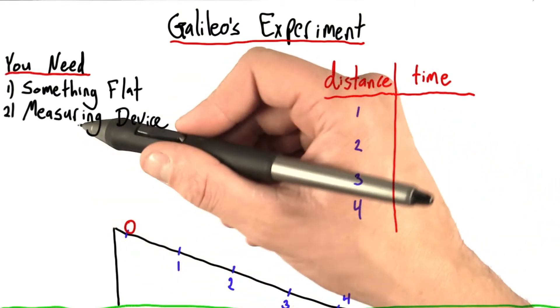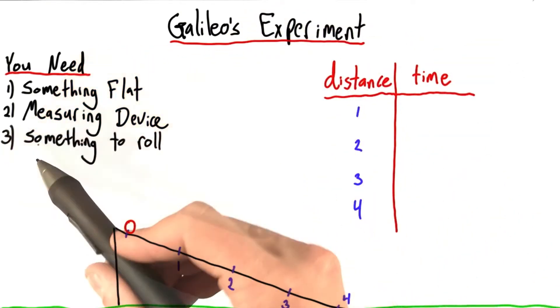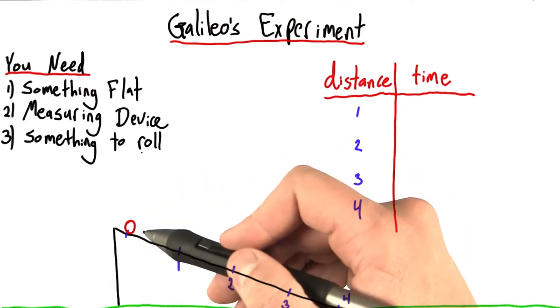You're also going to need a measuring device. This could be a meter stick or a tape measure or anything else that measures distance. You'll need something to roll, and it should be either spherical or cylindrical.